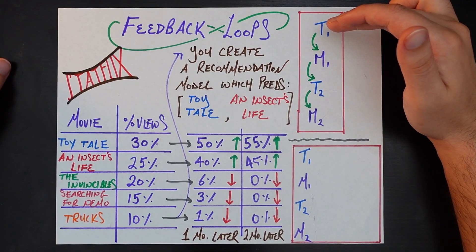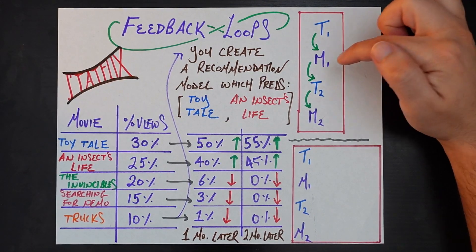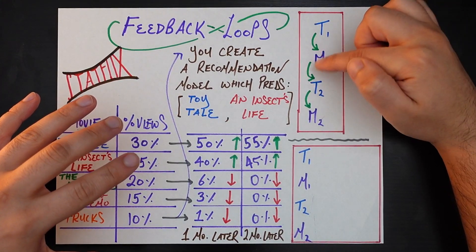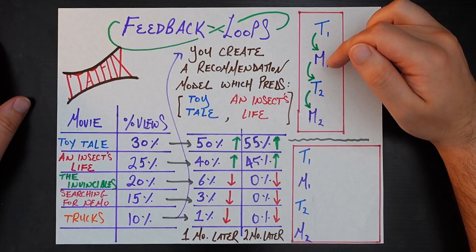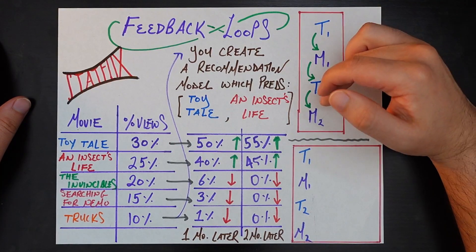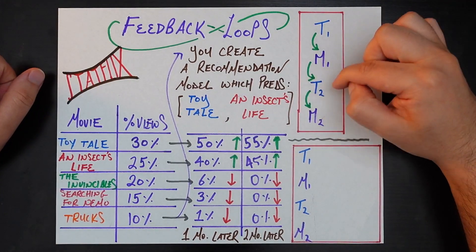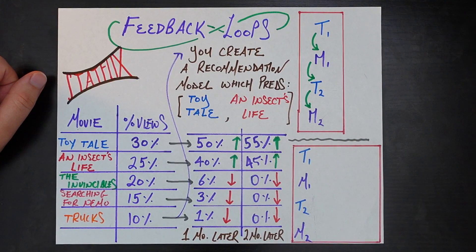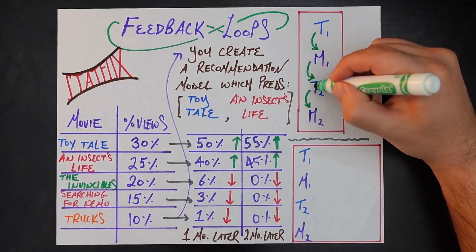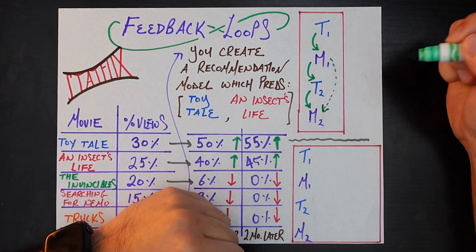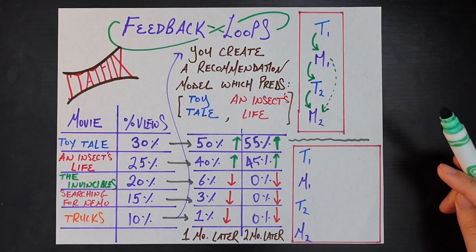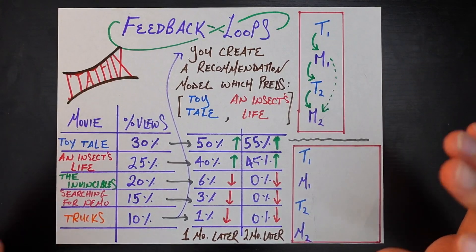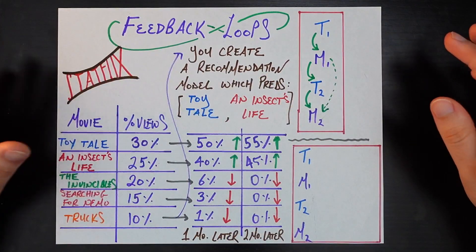Let's look at this graphically. T1 is the training data from the first time period — before you had any recommendation model. M1 is your first recommendation model, trained on T1. Here's the key that leads to all of our problems: M1 is responsible for generating the training data T2 in the second time period, and it's exactly that T2 that's used to train the next version M2. The first version of your model — indirectly but causally — impacts what the second version looks like, through generating the training data fed into it. That is the feedback loops problem in machine learning models.